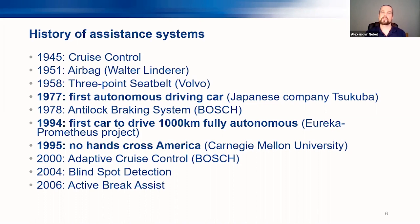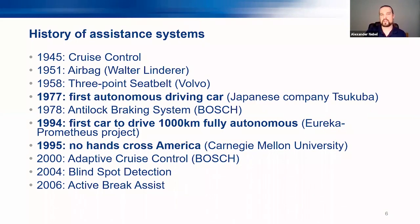Interesting things started happening in the 2000s: adaptive cruise control at the beginning of 2000, blind spot detection in 2004, and active brake assist in 2006. So technologies which are now becoming more and more common in cars have already existed for 10 or 15 years.